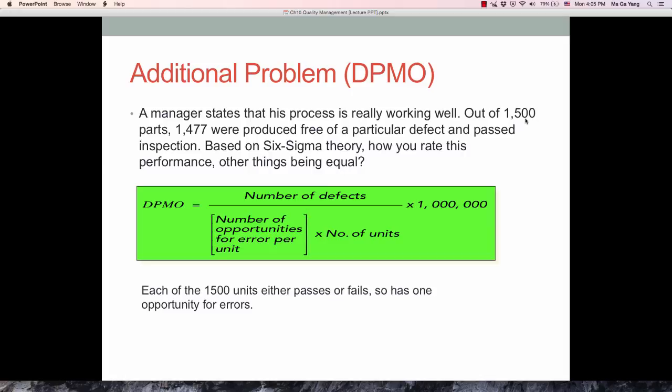Defect would be 1,500 minus 1,477. So, 23 is the number of defects divided by the total number of opportunities for error per unit, which is 1,500, times one unit, times one million, which equals 15,333. What do you think? This is the DPMO: more than 15,000 defects per million opportunities. Regardless of what the manager thinks, this process is really not good in terms of Six Sigma theory. We can say this is not a good process. It needs to be examined and improved if we want to live up to Six Sigma quality.